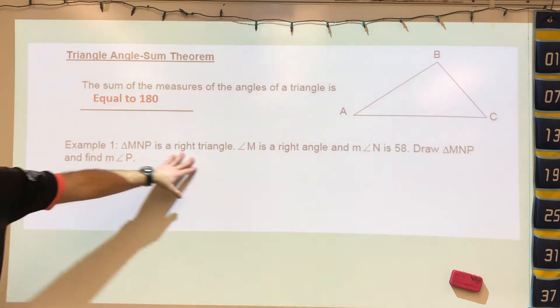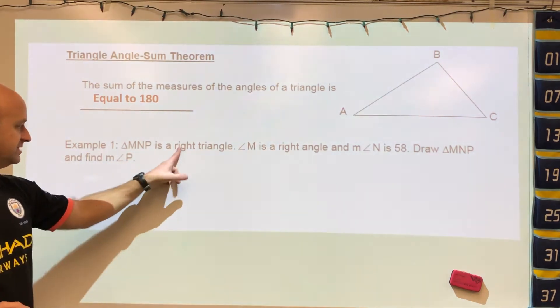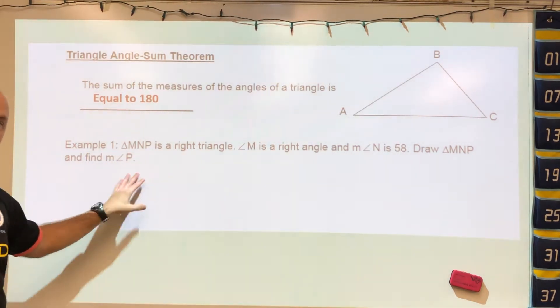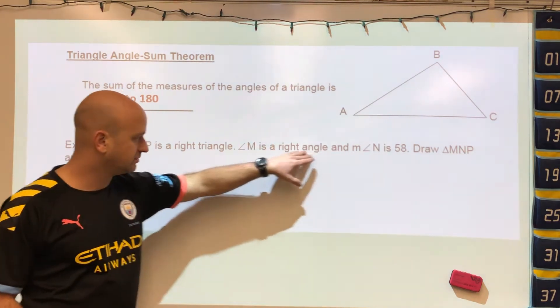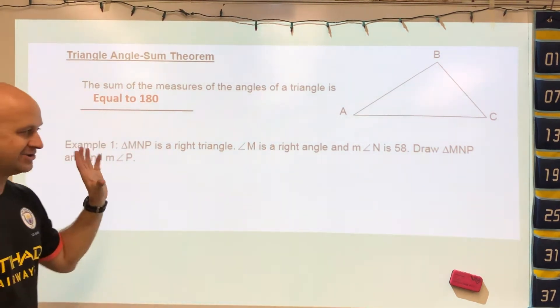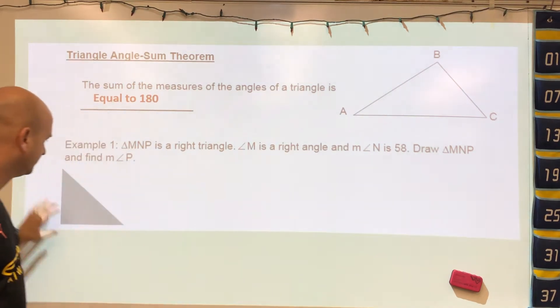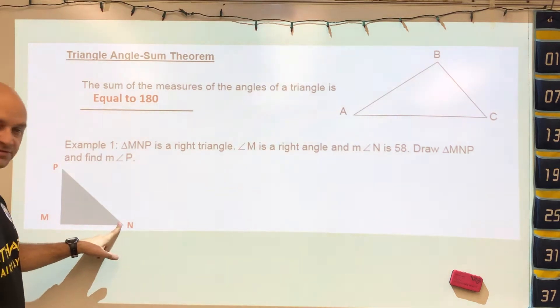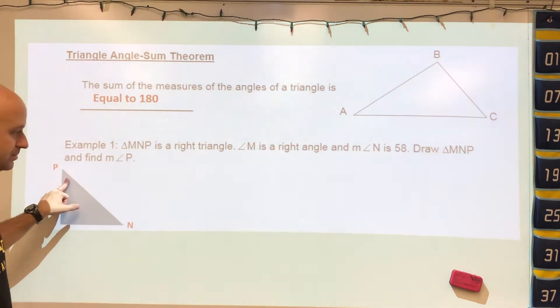In this example here they tell us that this triangle is a right triangle which means we have a 90 degree angle somewhere. In the written description, angle M is the right angle and angle N is 58. So if we were to draw this triangle, M would be 90, N would be 58, and they want you to find angle P.